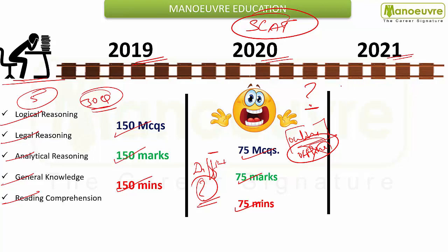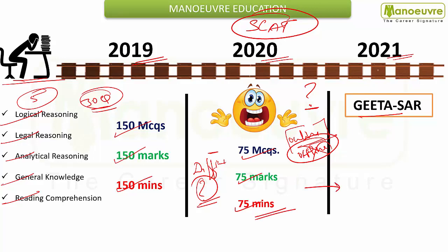So guys, in 2021 nothing new has happened. There is only one thing and that is the Gita saar — change is necessary. So the change that happened in 2020 will be repeated the same again in 2021. In 2021 also, there is the same paper pattern and same criteria as in 2020. Don't worry about difficulty levels — the things remain constant. The difficulty level in 150 questions is the same as in 75 questions, and the same will be repeated in 2021.